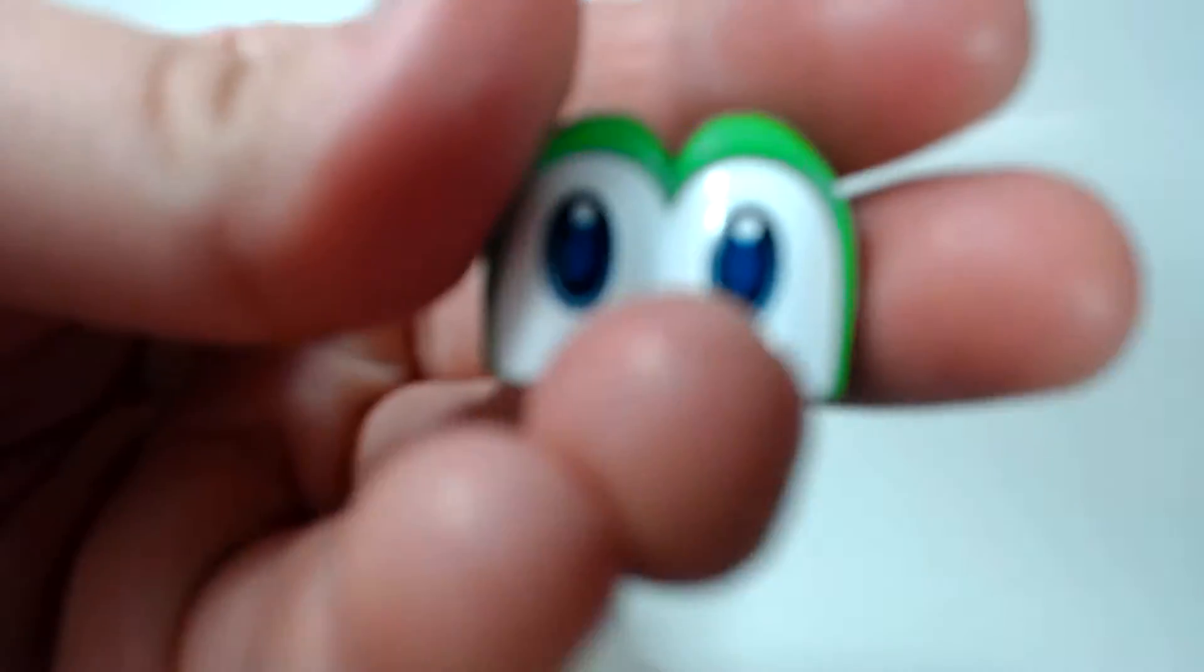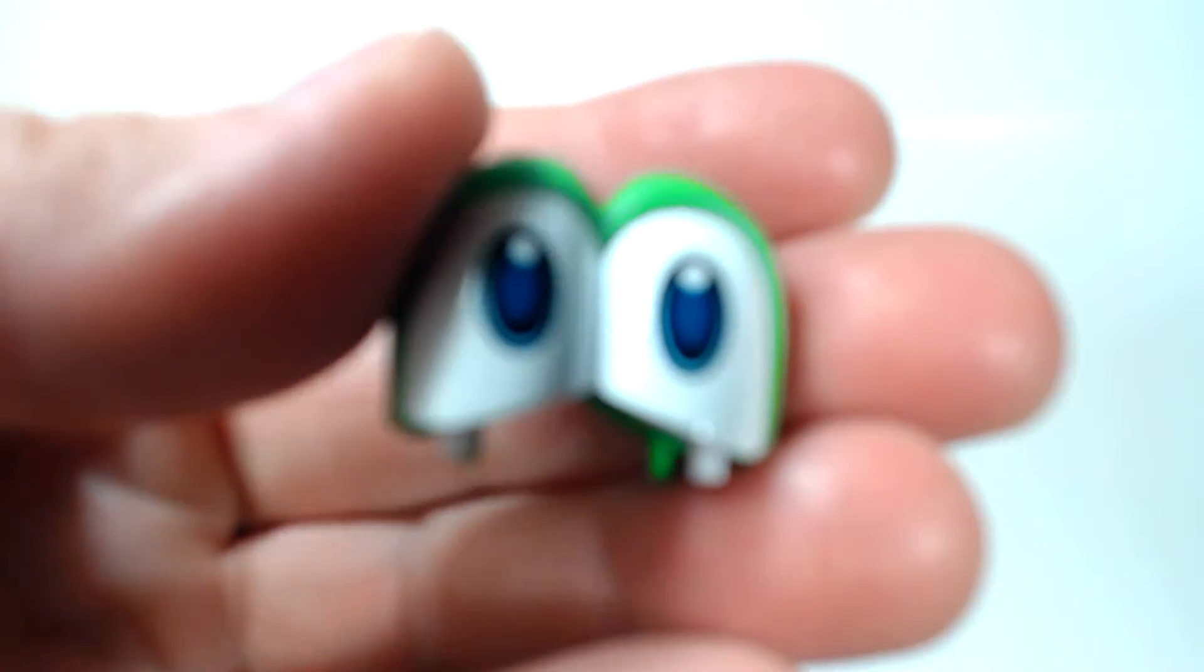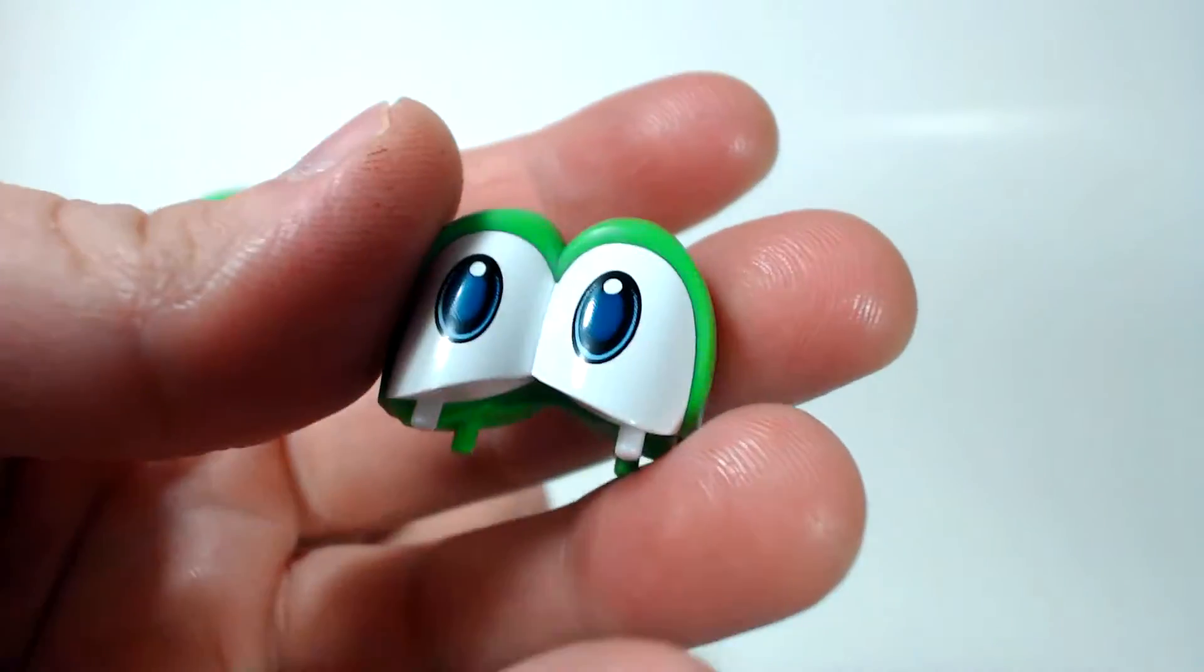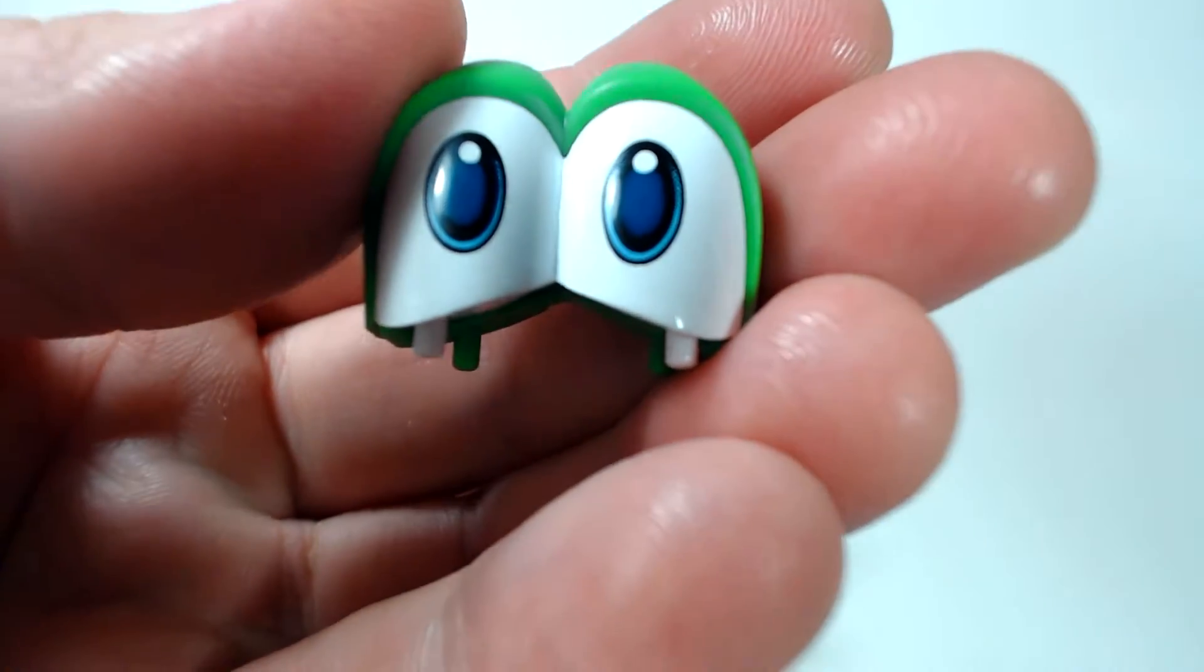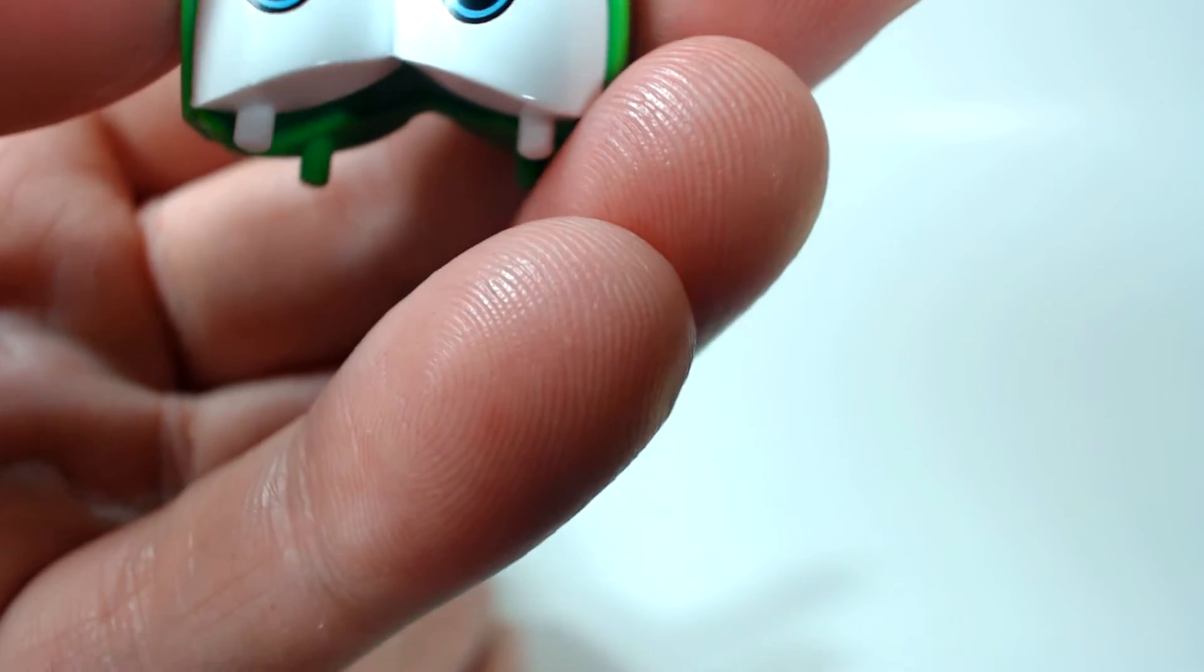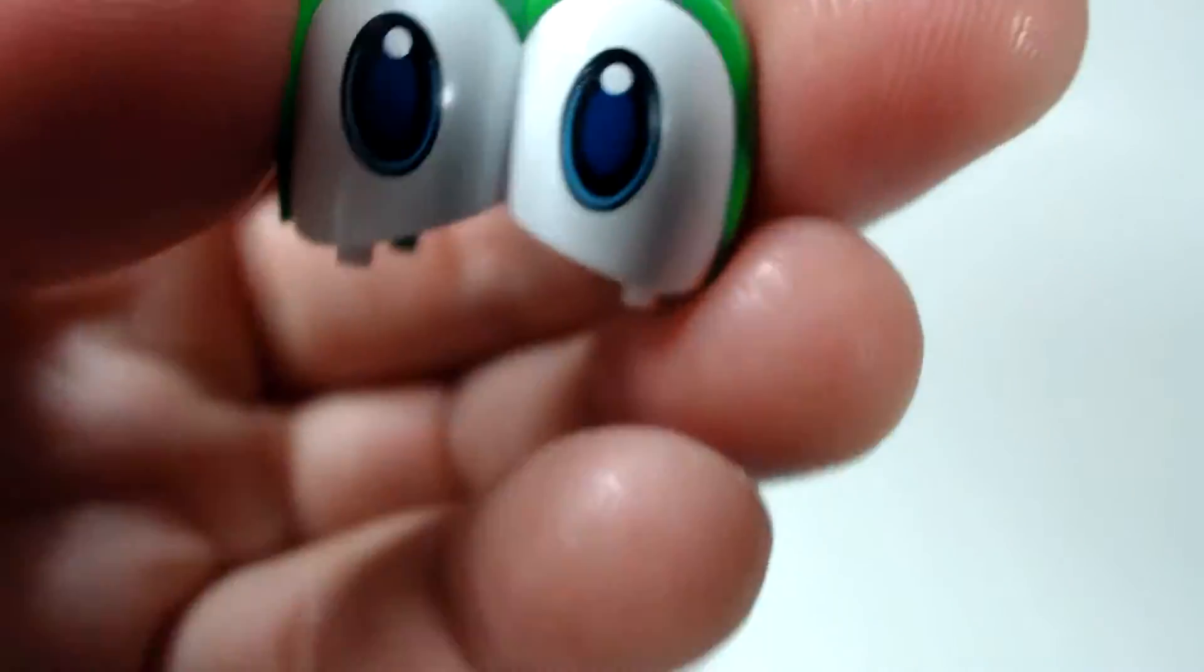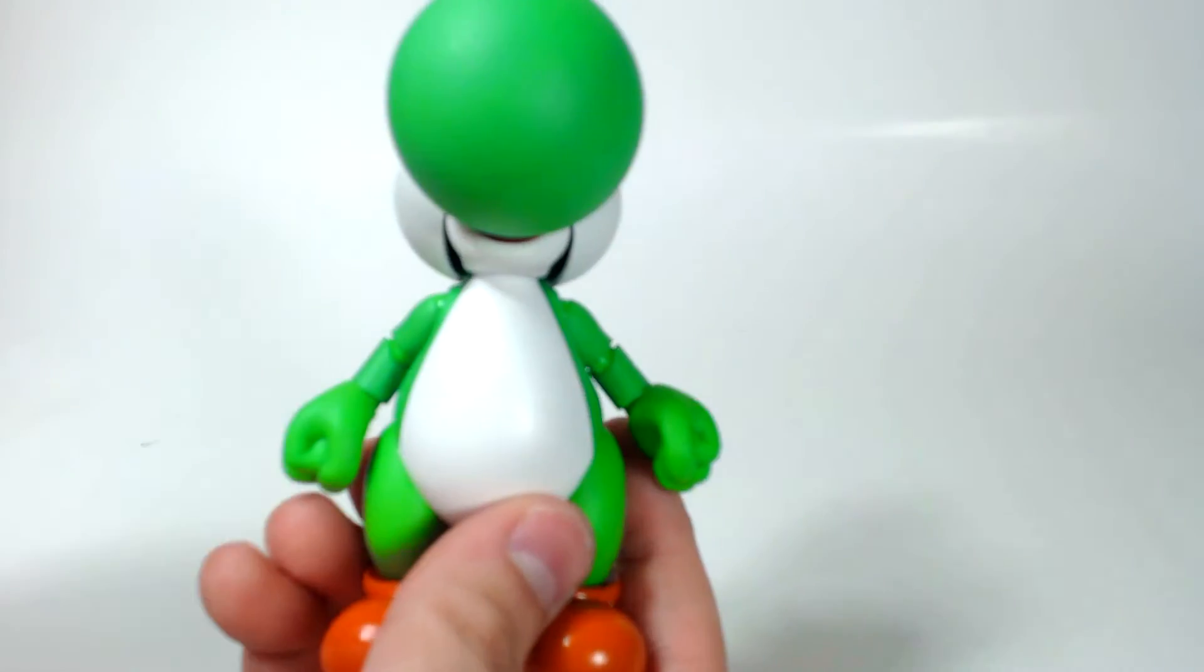And the paint job on the eyes I'm actually really impressed with. Now normally with Mario and Luigi, the eyes will be pretty much covered with plastic because they don't have to move at all and you don't have to interchange them or anything. But they still kind of give off that same effect on Yoshi's eyes, which is really good. Now let's go over articulation.